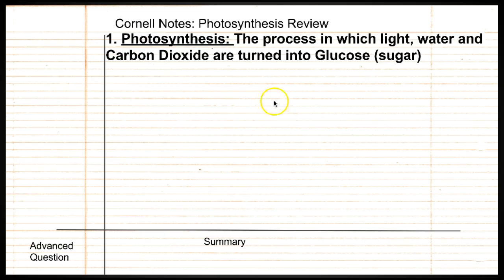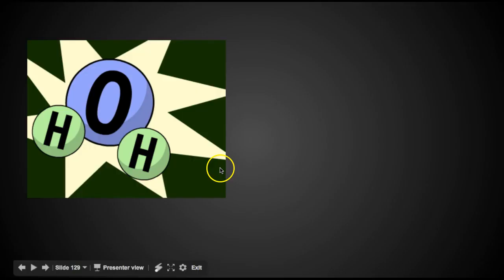So photosynthesis, if you don't remember, is the process in which light, water, and carbon dioxide are turned into glucose, which is sugar. For number one, you can write 'What is photosynthesis?'